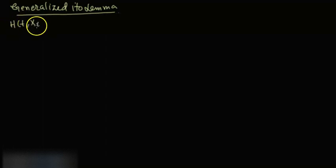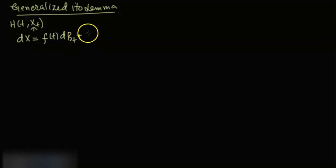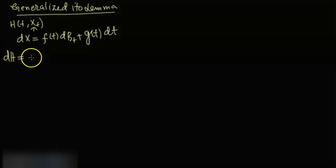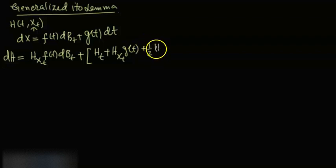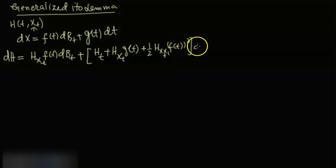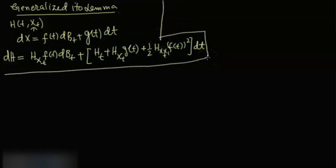The generalized Itô lemma states that if you have a function h depending on time and some process X, where the process is given by dX = f(t)dB(t) + g(t)dt, then the dynamics of h are given by: dh = (∂h/∂x)·f(t)dB(t) + [(∂h/∂t) + (∂h/∂x)·g(t) + (1/2)·(∂²h/∂x²)·f(t)²]dt.